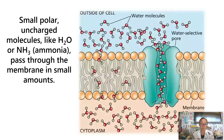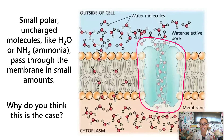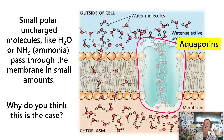The bulk movement of water into or out of a cell, because water is polar, goes through a specialized protein called an aquaporin — 'aqua' for water, like a pore. Small polar uncharged molecules may squeeze through the lipid bilayer directly in small amounts, but they primarily use a protein channel or transport protein to enter or leave a cell.